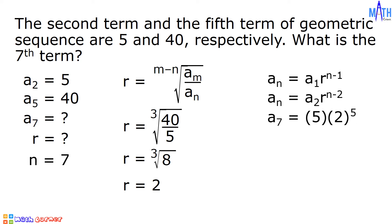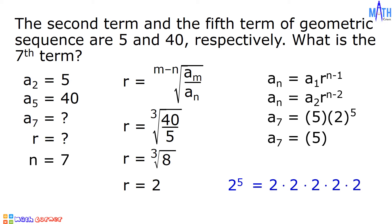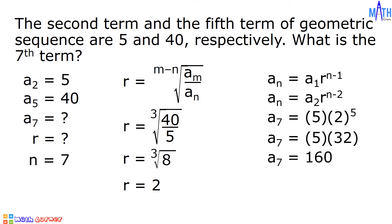Let us simplify. A sub 7 equals 5 times 2 raised to 5. Since 2 times 2 times 2 times 2 times 2 equals 32, and 5 times 32 equals 160, the value of the seventh term is equal to 160.